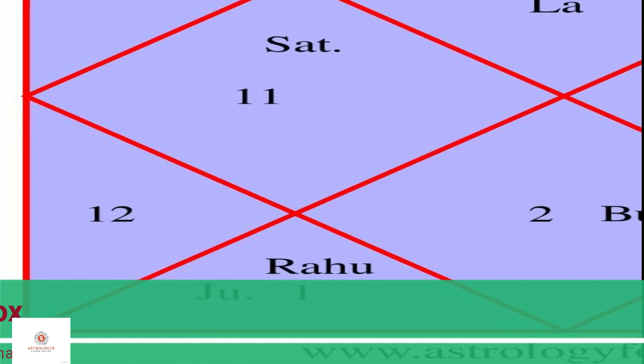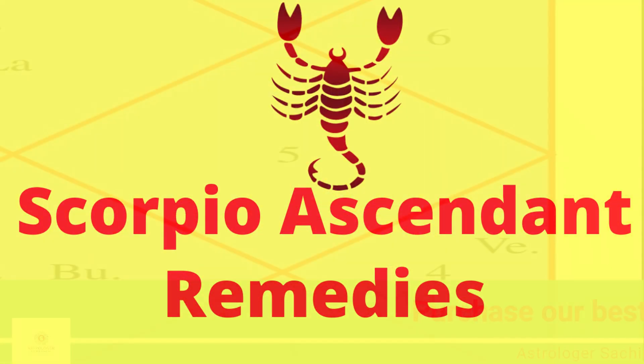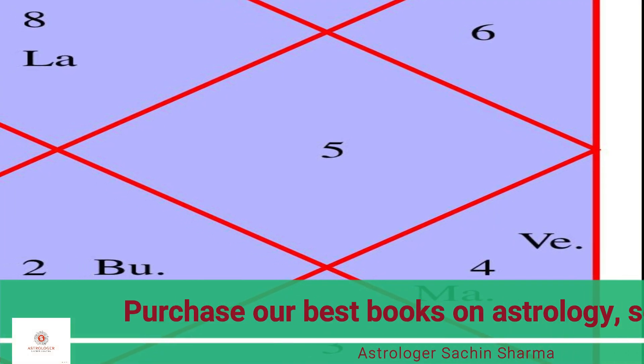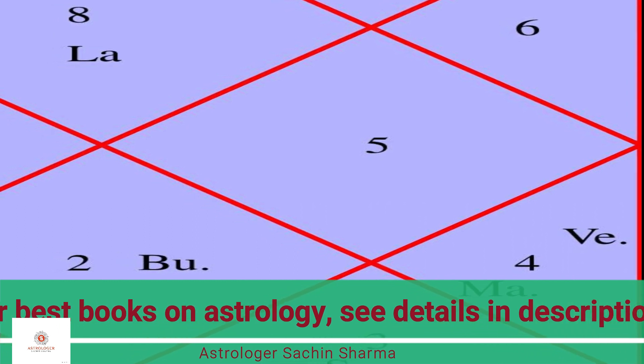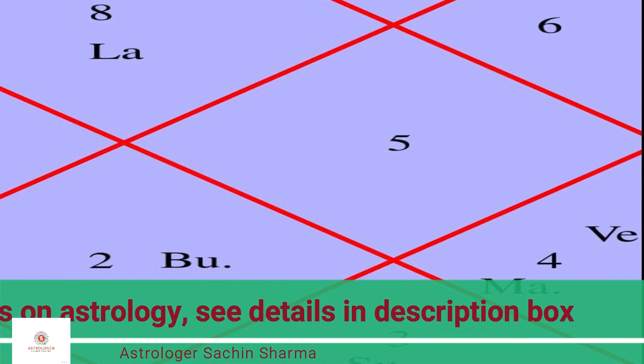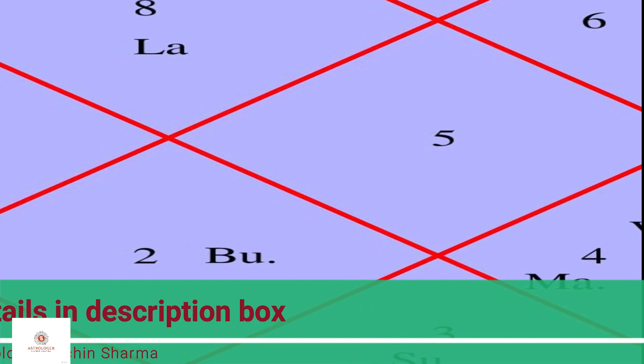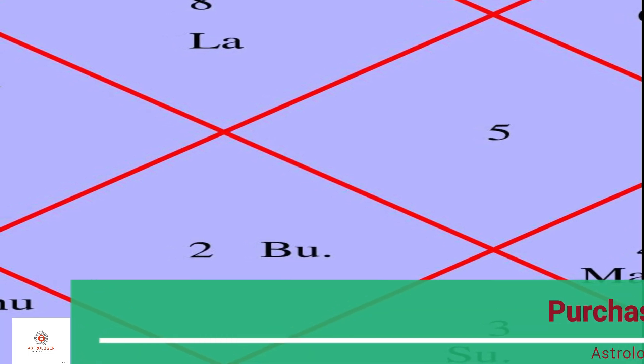Now let's discuss the most important remedies during this month. Chant the Rahu Beej Mantra and Jupiter Beej Mantra regularly to pacify the planets. Offer regular prayers to Lord Ganesha, as he is known to bless individuals with wisdom and success while reducing the malefic influence of Rahu and Jupiter. Perform regular acts of charity, such as donating food, clothes, or money to the less fortunate.